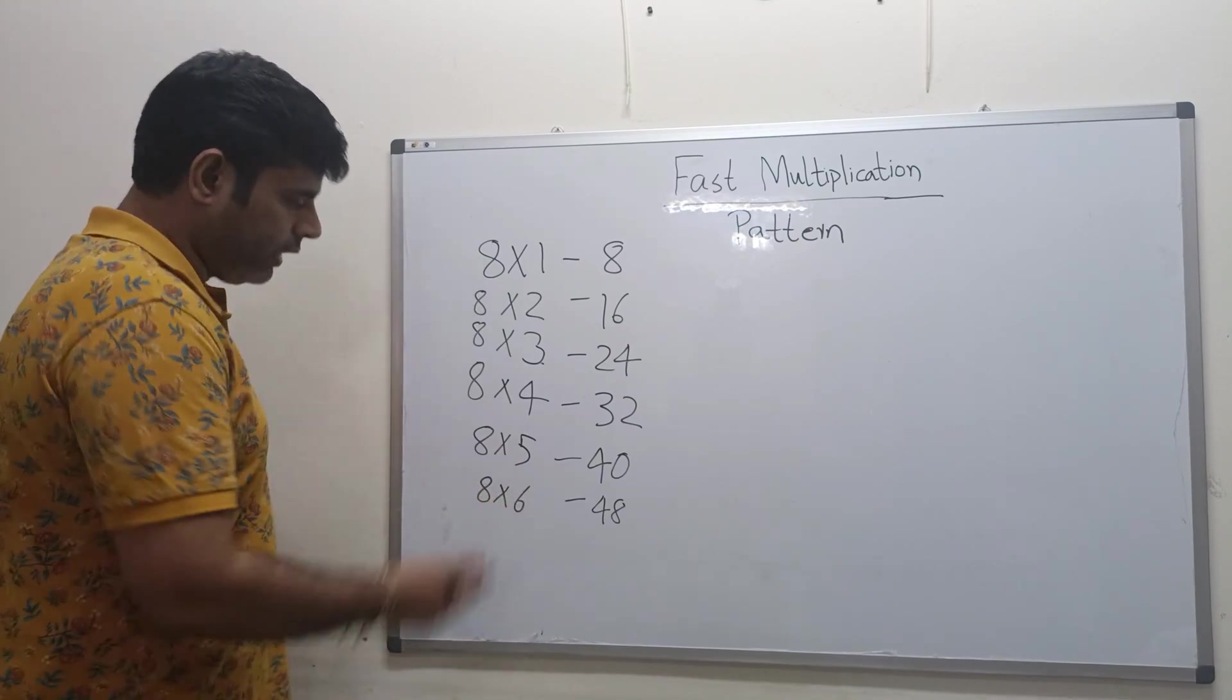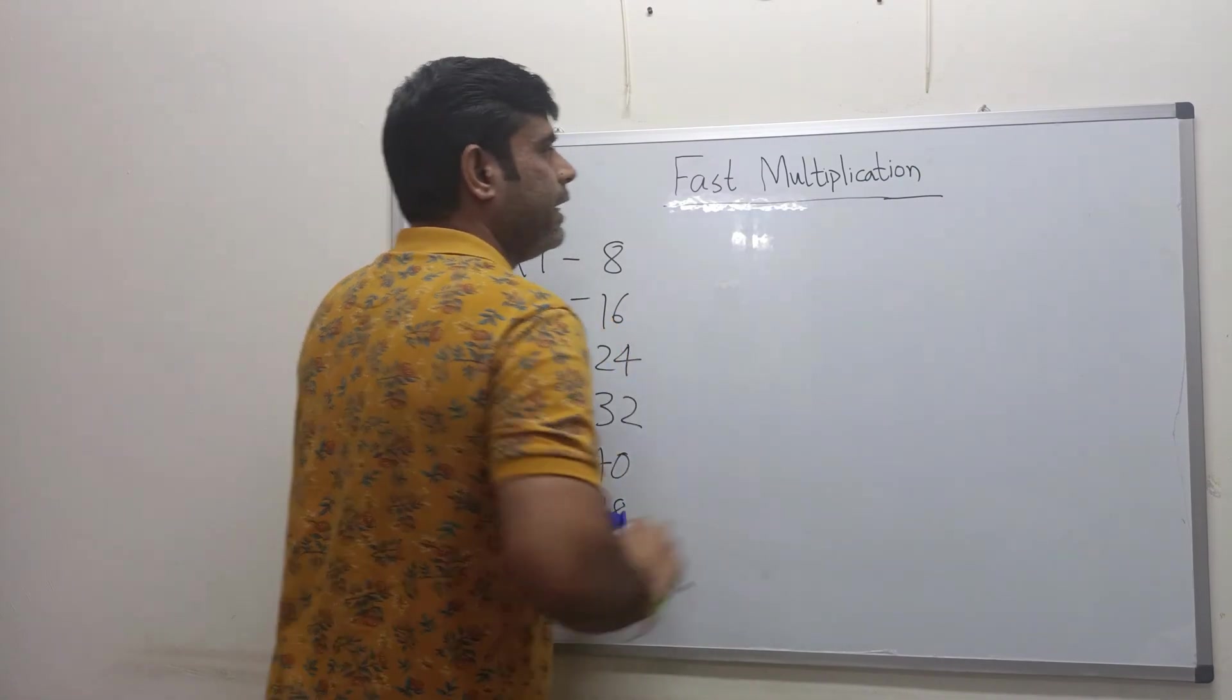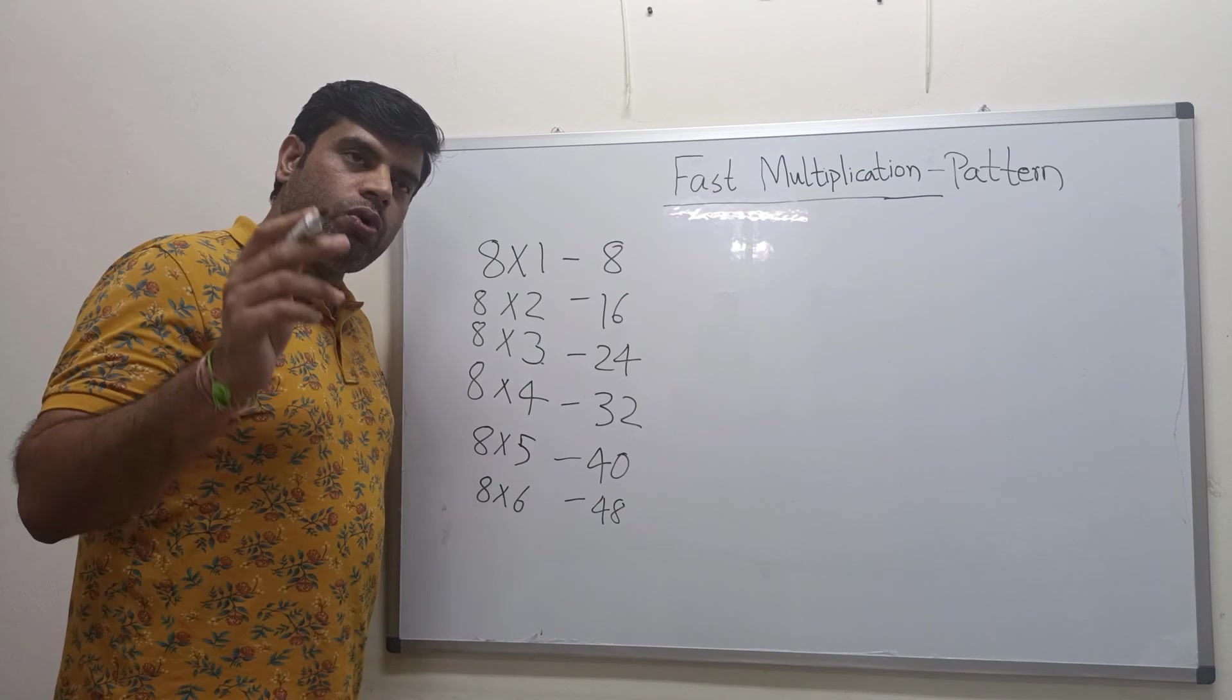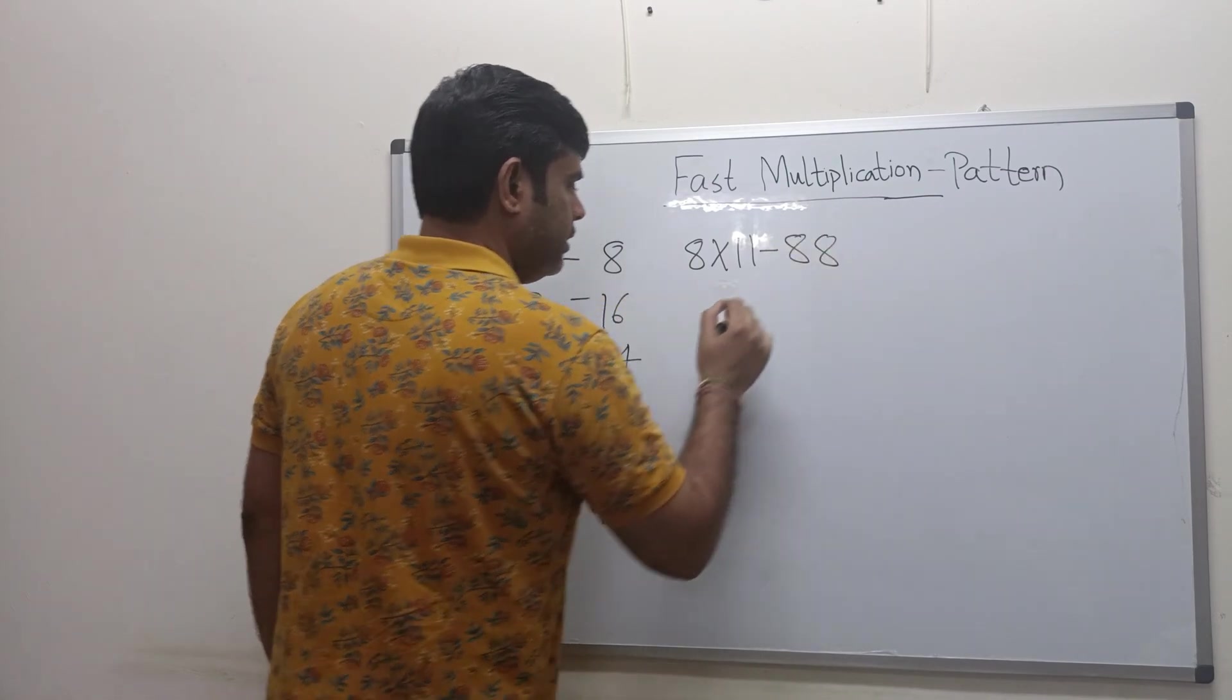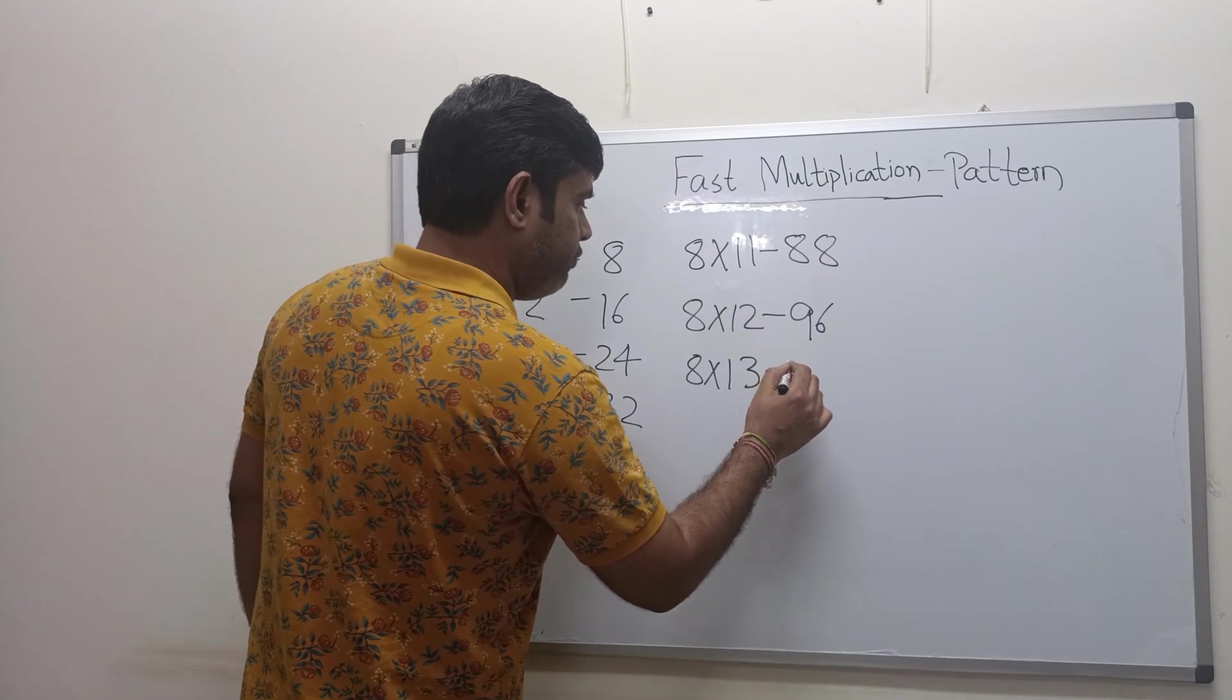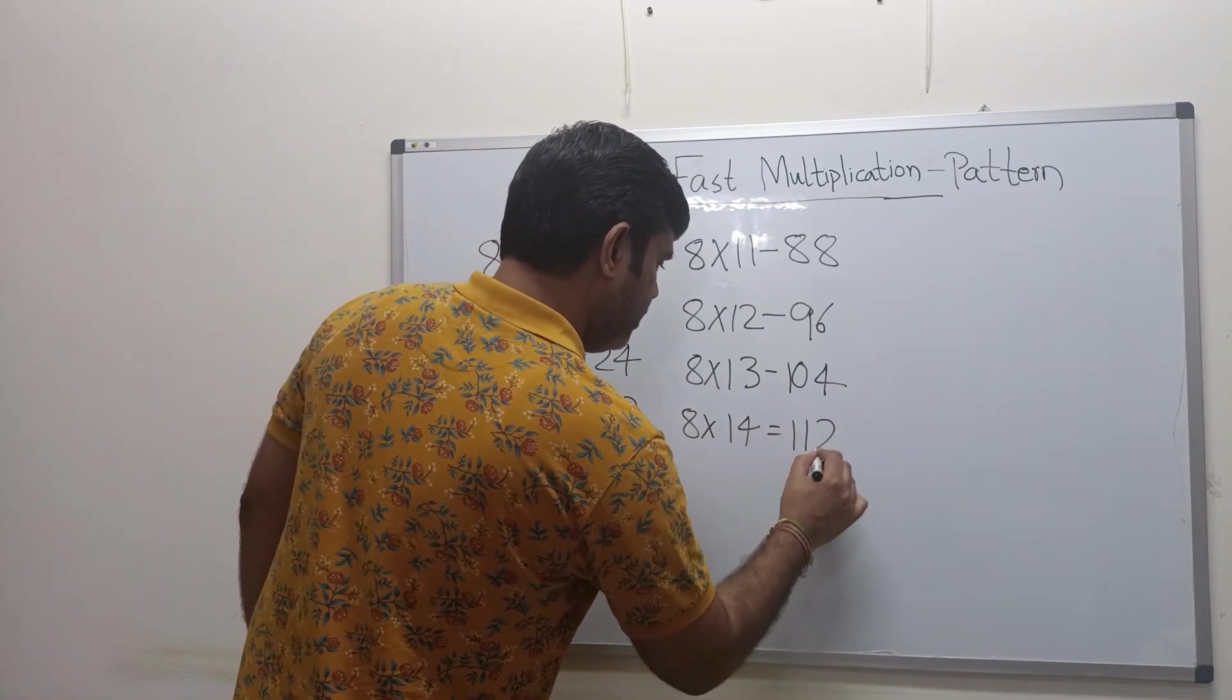Now the pattern is, same way we can go 8 multiplied by 7, 8, 9, 10 like this. You already know it's very simple. Now if I want to know what is 8 multiplied by 11, let's see the number or the answers and you will find the pattern by yourself. 8 multiplied by 12, I hope you are seeing the similarities. Please have a look and try to find out, and if you have known this, please write it in the comment box.